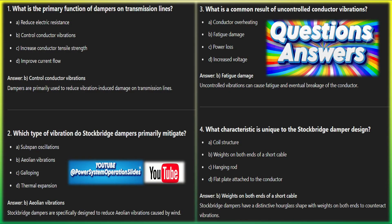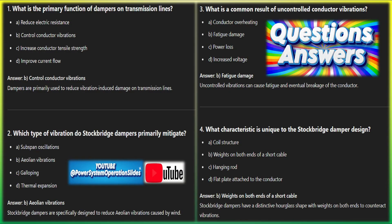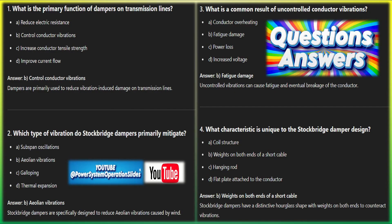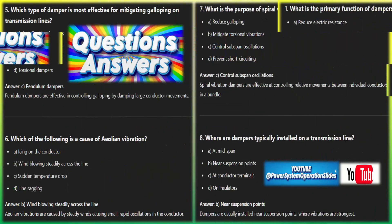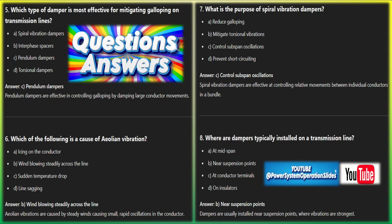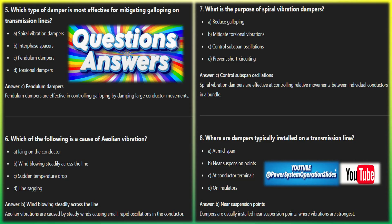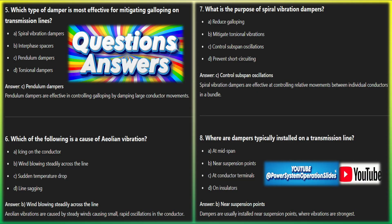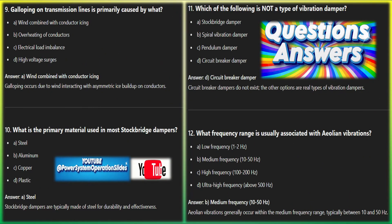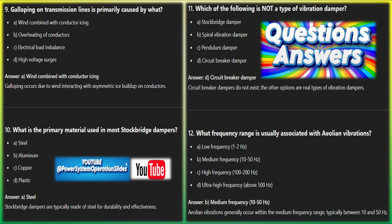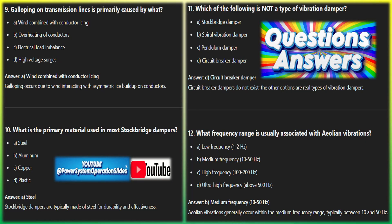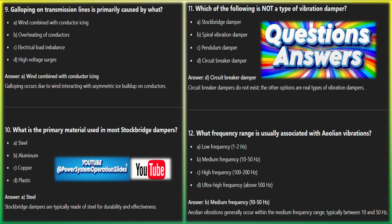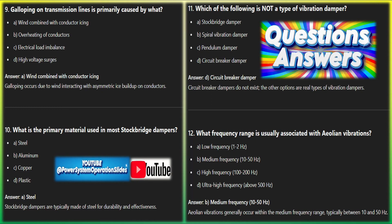Transmission line dampers are essential devices designed to mitigate vibrations and oscillations in overhead power lines, ensuring their longevity and reliability by addressing specific vibration challenges caused by wind, ice, or other environmental factors. The most common types include Stockbridge dampers, which use weighted masses to dampen high-frequency Aeolian vibrations; spiral vibration dampers (SVD), which employ helical wires to dissipate energy through friction; and tuned mass dampers, which target low-frequency galloping with mass-spring systems. Other types include bead dampers for high-frequency vibrations, fluid dampers for low-frequency oscillations, and Aeolian dampers specifically for wind-induced vibrations. Galloping dampers address large-amplitude oscillations caused by ice or wind, while distributed dampers provide uniform damping across long spans. Hybrid dampers combine multiple mechanisms for broader protection, and interphase spacers with damping prevent conductor clashing.